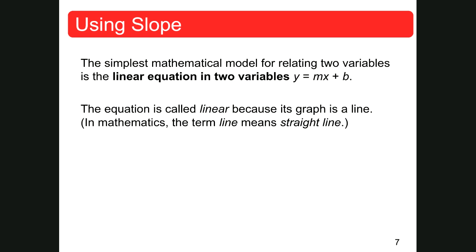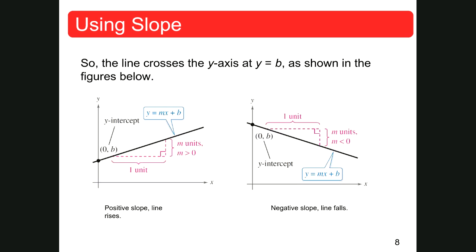In mathematics, the term line means straight line. The line crosses the y-axis at b, or the y-axis at y equals b. If I have an equation that is y equals 2x plus 3, this is my slope and this is my y-intercept — this is where it's going to cross the y-axis. When we graph something in slope-intercept form, it's really easy. First thing you're going to do is graph the y-intercept, and from that point you're going to graph the slope.